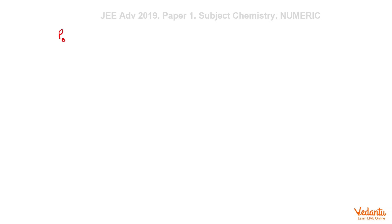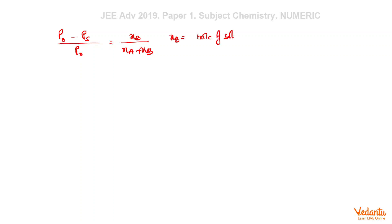We know that (P0 minus PS) divided by P0 is equal to Nb divided by (Na plus Nb), where Nb equals moles of solute and Na equals moles of solvent. Let us assume A and B for solvent and solute respectively.